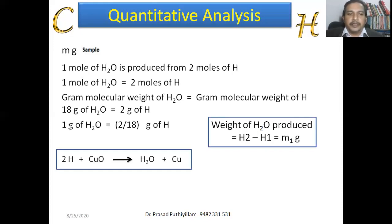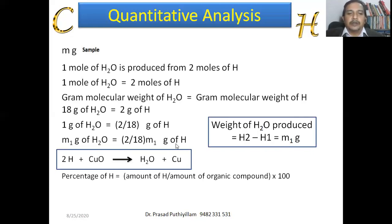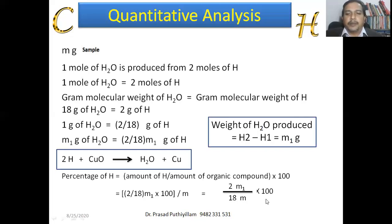If instead of 18 grams, it is 1 gram, then there is 2/18 grams of hydrogen. We have M₁ grams of water molecule formed — that is H₂ − H₁ = M₁. Therefore M₁ grams of water contains (2/18) × M₁ grams of hydrogen. The percentage of hydrogen = (amount of hydrogen / amount of organic compound) × 100, which is (2/18 × M₁) / M × 100, rewritten as 2M₁ / 18M × 100.